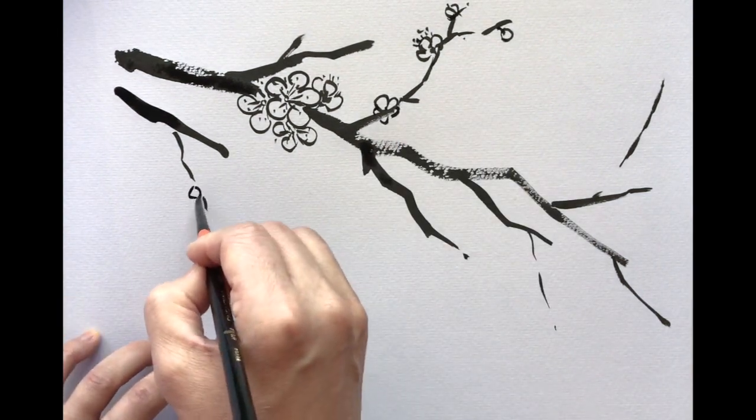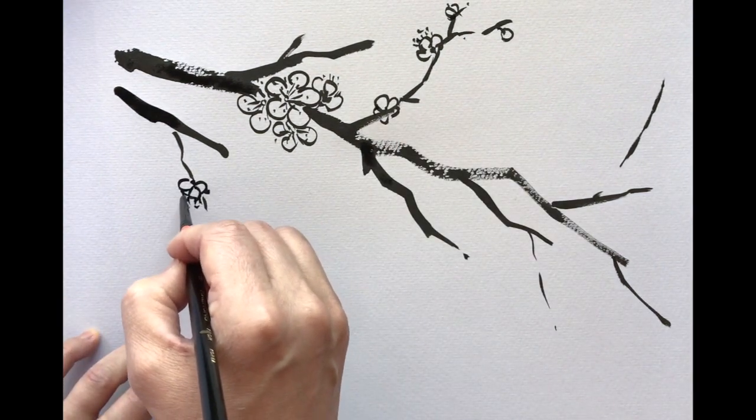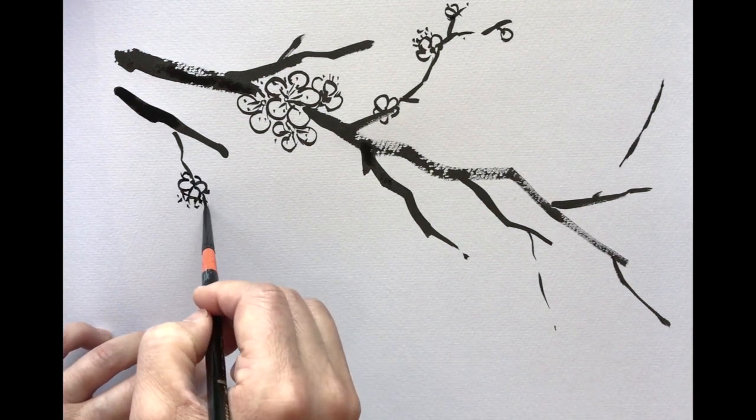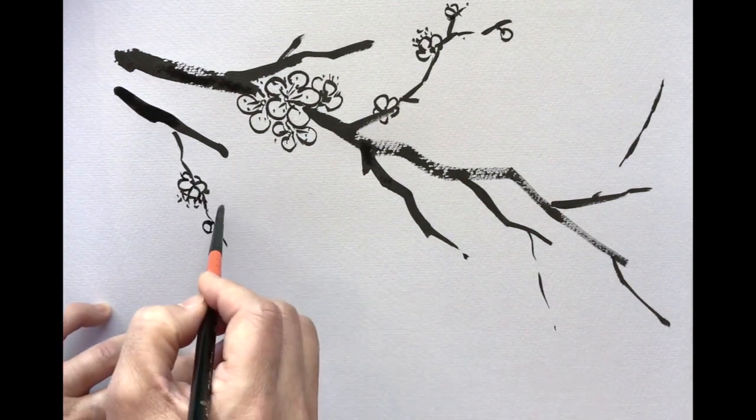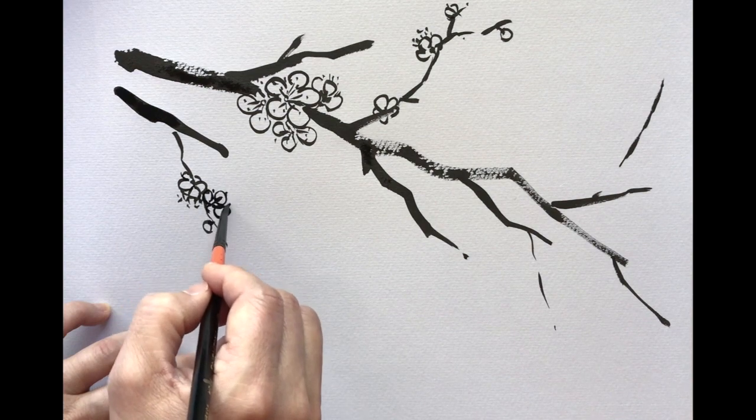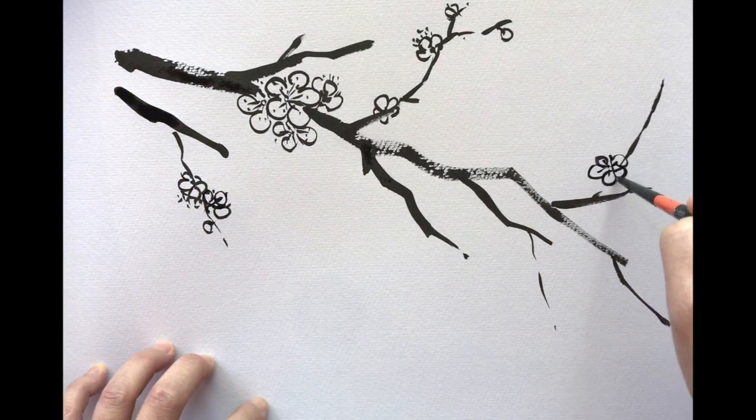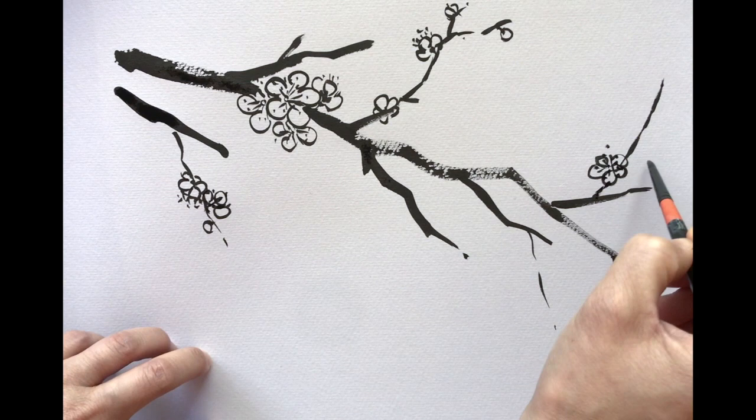Think about how bigger flowers with more weight go on the meatier part of the branch, and smaller bits go on the less meaty part of the branches. So, it's sort of a bit more in harmony.